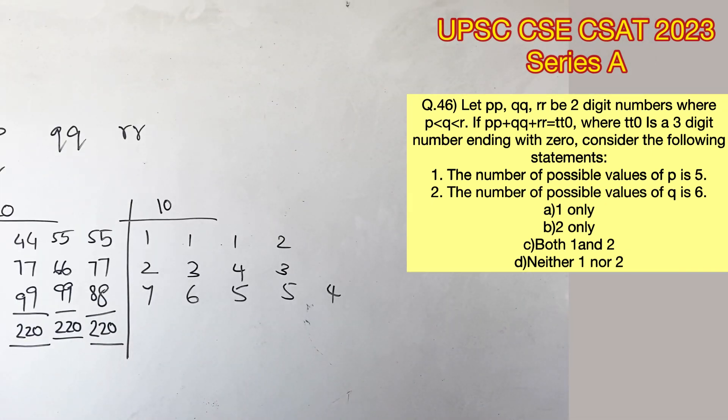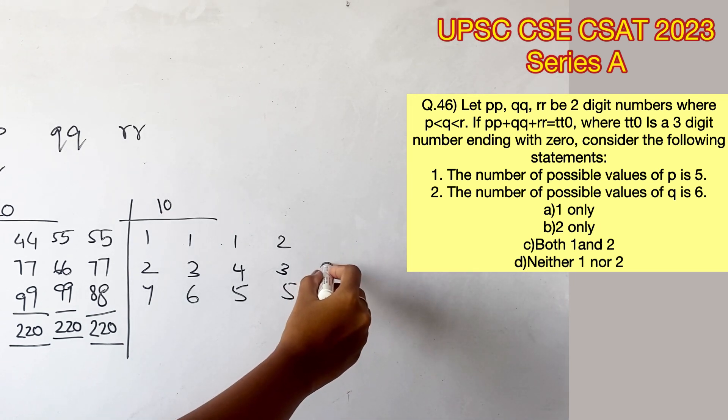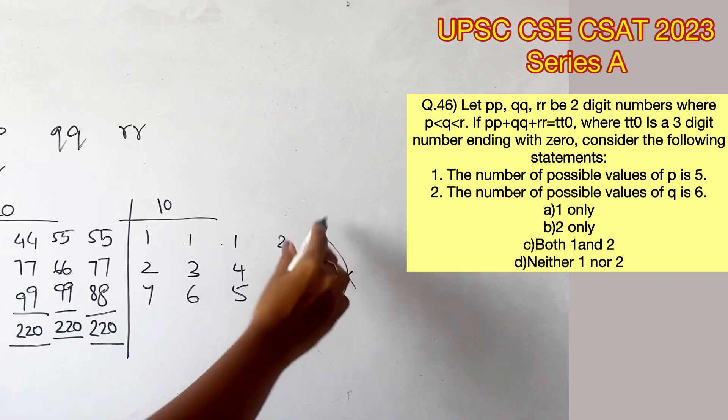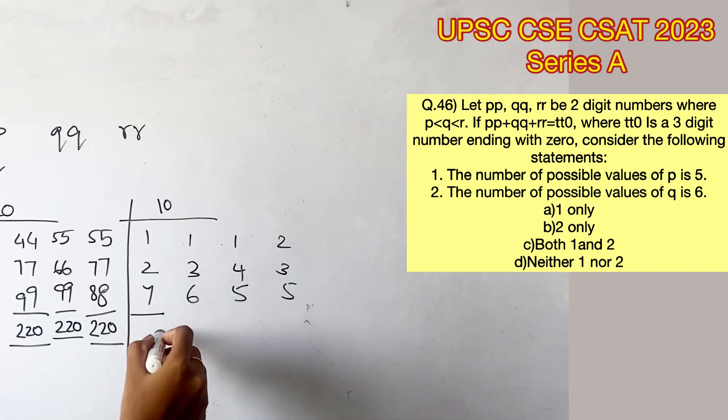After this, no case would be possible because if you consider 4 in the place of R, we will have to consider 5 in the place of Q, which does not follow the condition. Therefore, these are the only possibilities for 10.